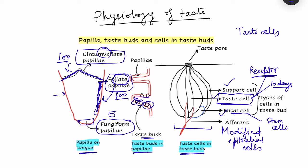These taste cells have certain microvilli on their surface, and these microvilli open on the dorsum of the tongue by means of a taste pore. All the microvilli are projecting into the taste pore. So the tastants make contact with the proteins which are present on the surface of these microvilli of the taste cells.